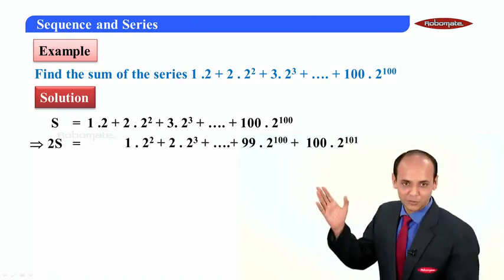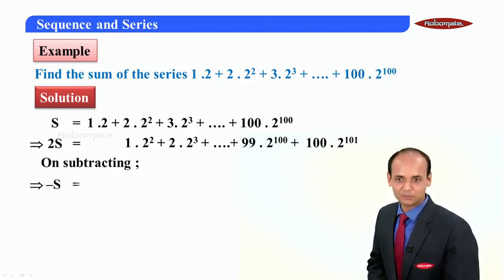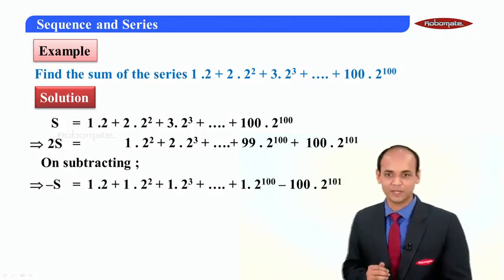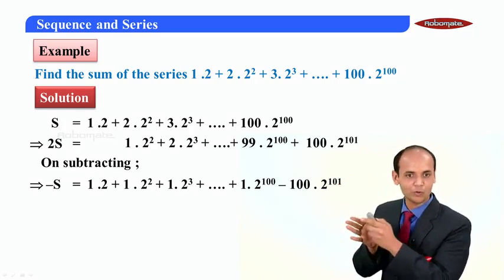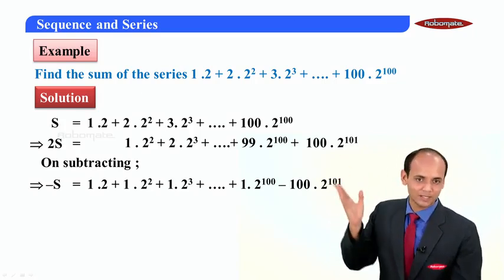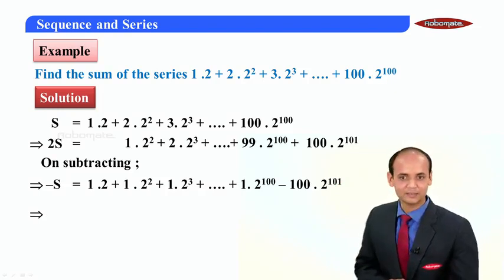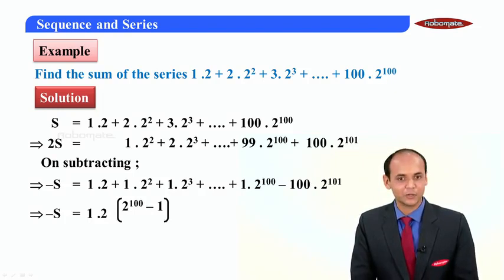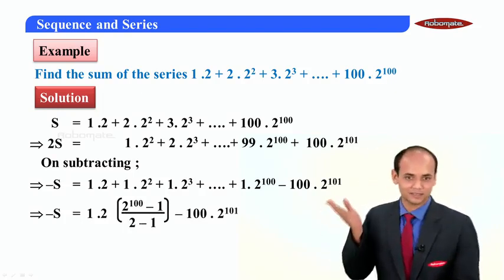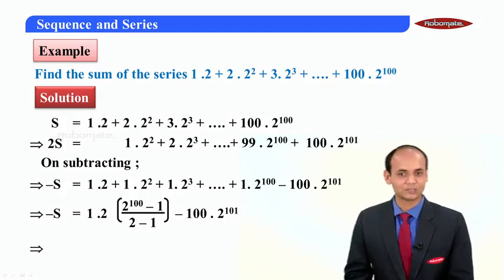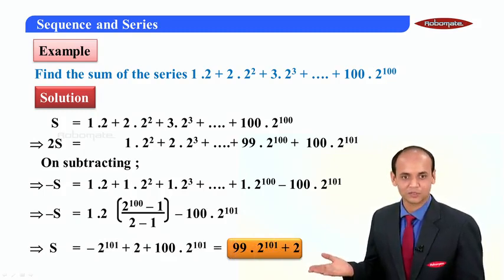I have multiplied the complete sequence by 2 and shifted the terms. On subtracting, S − 2S becomes −S. The remaining terms give 1·2 + 1·2² + 2³ + 2⁴ + ... + 2¹⁰⁰ minus the last term 100·2¹⁰¹. From the first to the 100th term it is a GP, so applying the sum of 100 terms in GP — a(r^n − 1)/(r − 1) — gives 2(2¹⁰⁰ − 1)/(2−1), minus 100·2¹⁰¹. Doing the calculation yields the final result. I hope students understood this concept. Thank you.